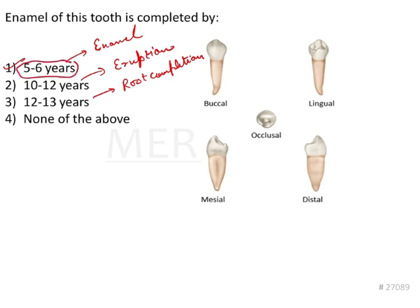Another short way to solve this question: it is very clear that it is a premolar tooth. No matter which premolar it is, if it is upper it will erupt from 11 to 12 years, if it is lower it will erupt from 10 to 12 years. Since the crown must be completed before eruption, we can rule out other options. The enamel is completed by 5 to 6 years, and that is the correct answer.